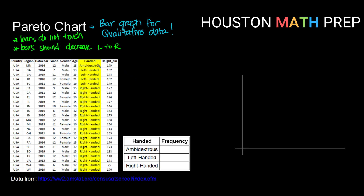If I count those up, I have one ambidextrous and four folks that are left-handed in my sample. Then, using the fact that my total needs to add up to my sample size of 24 — if I do 24 minus 5, there must be 19 people in my sample that are right-hand dominant.